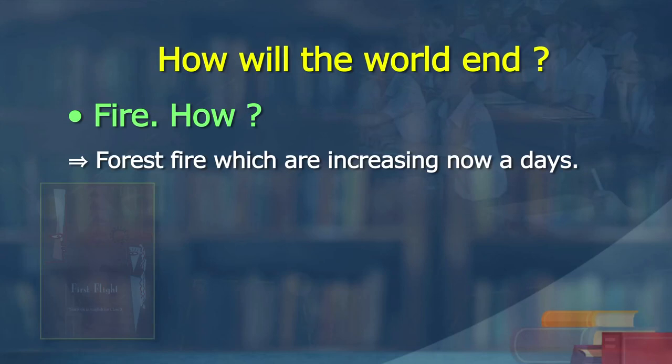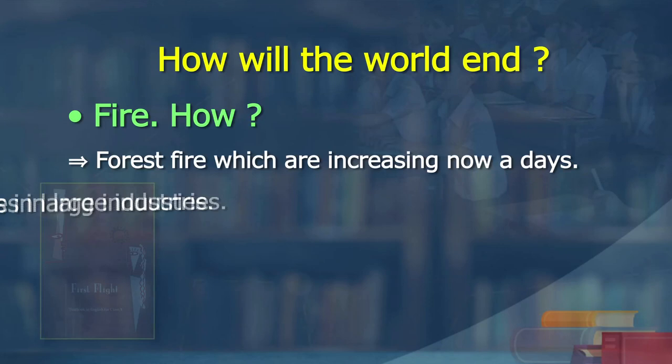Forest fires, which are increasing nowadays - I know the entire Australia had lots of forest fires. Amazon is burning, and even Uttarakhand is now suffering. Sometimes our farmers burn their harvested stubble. So the world is also facing danger from fire. Then, man-made fires, like in large industries when a fire happens in an industry.